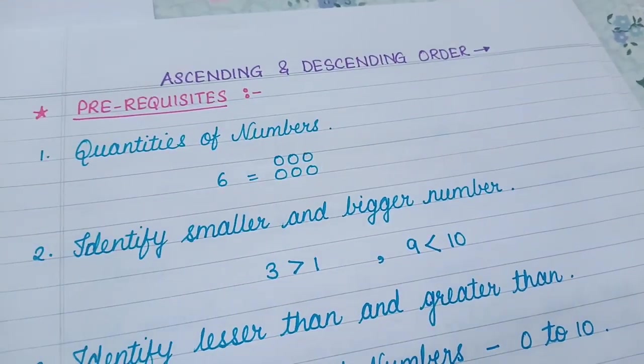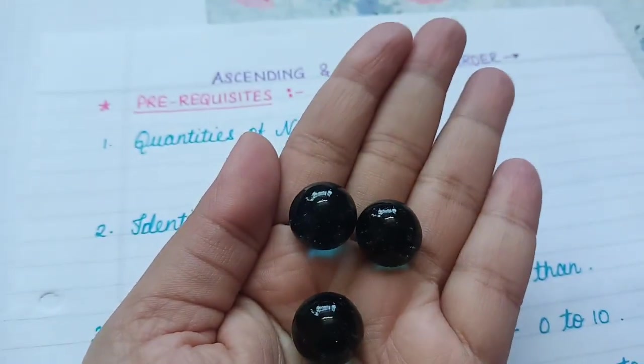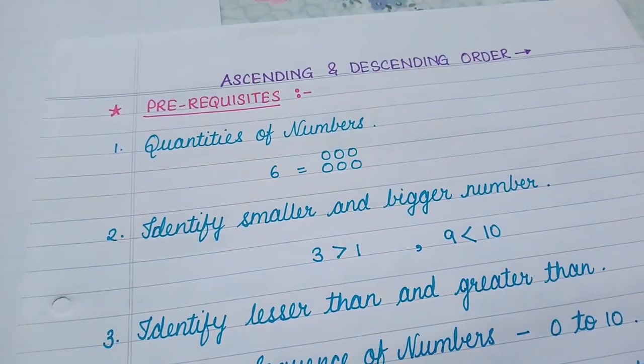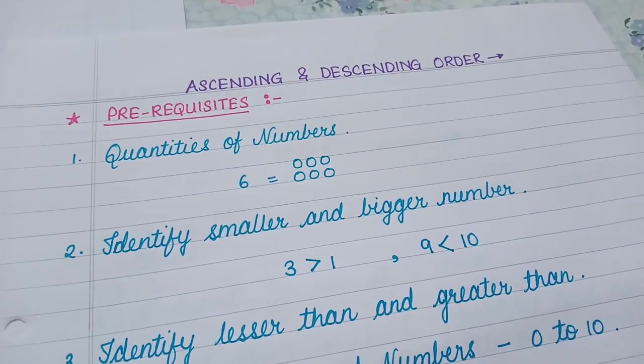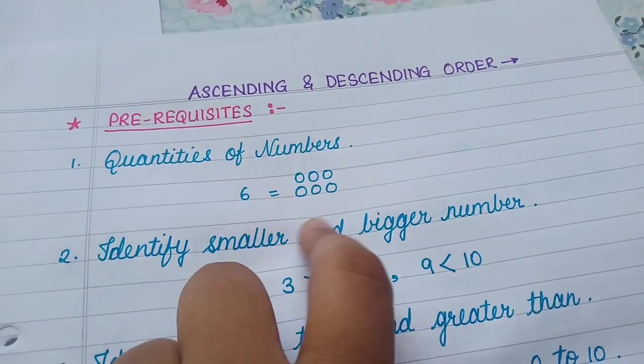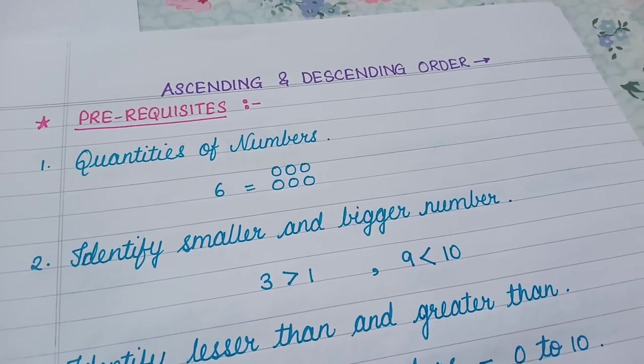So this you can do using any hands-on material like this, like a manipulative, like a marble or pom-pom. You can use anything that you have available in your house and teach the child that 6 represents a quantity of 6 using that manipulative.